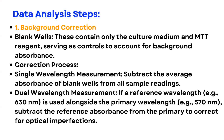The next step is data analysis, starting with background correction. Blank wells containing only culture medium or MTT reagent serve as controls for background absorbance. For single wavelength measurement, subtract the average absorbance of blank wells from all sample readings. For dual wavelength measurement, using a reference wavelength of 630 nm alongside the primary wavelength of 570 nm, subtract the reference absorbance from the primary to correct for optical imperfections.